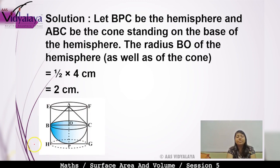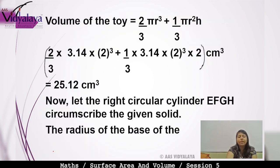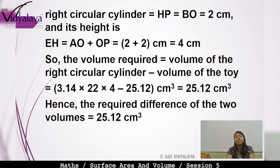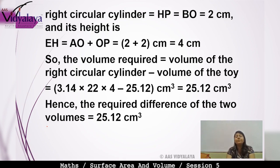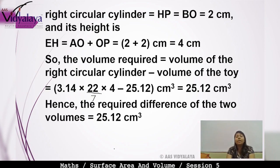Now a right circular cylinder EFGH circumscribes the toy. The radius of the cylinder equals BO = HP = 2 cm, and the height equals AO + OP = 2 + 2 = 4 cm. Required difference = volume of cylinder − volume of toy = 3.14 × 2² × 4 − 25.12 = 25.12 cm³. Hence the required difference between the two volumes is 25.12 cm³.